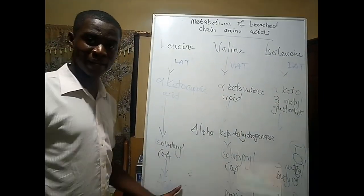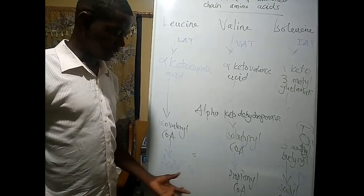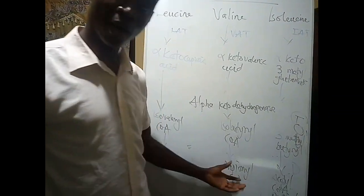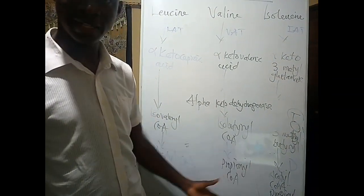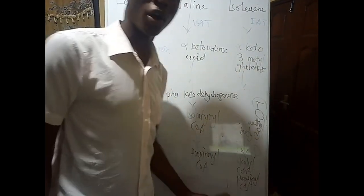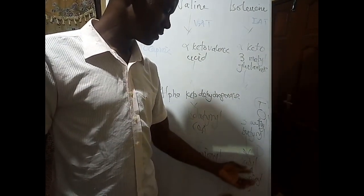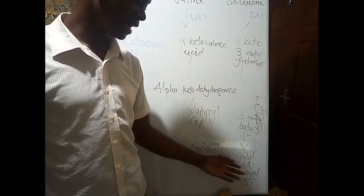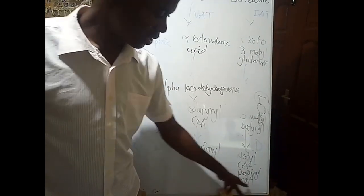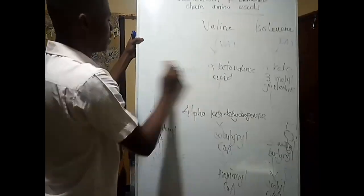The acetyl-CoA produced can go into fatty acid synthesis and eventually lead to energy production. Propionyl-CoA can be converted to succinyl-CoA, which will enter the Krebs cycle and also help to generate energy. One important pathway I want to highlight is the metabolic pathway of propionyl-CoA.